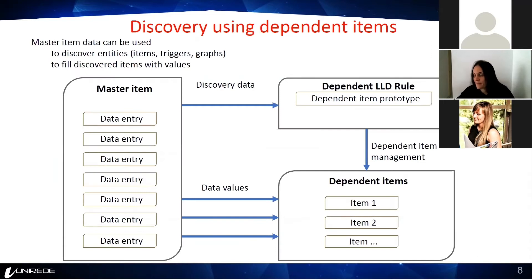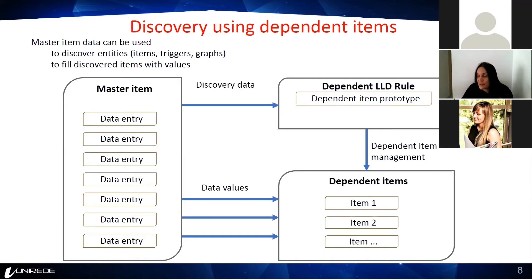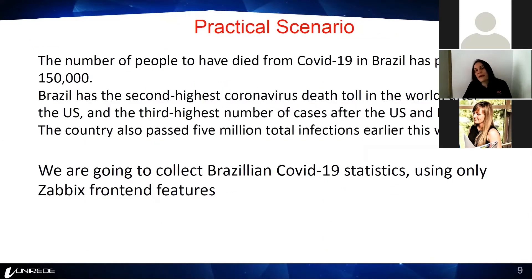The fourth feature is discovery using dependent items. The advantage of this feature is to combine bulk data collection with LLD prototypes. All the low-level discovery data comes from a master item. It's a very smart way to treat the data, because you have just one single request to the application, and with that single request you will be able to populate all the prototype items and get all the data. We use the master item, dependent item, low-level discovery, and preprocessing all together.